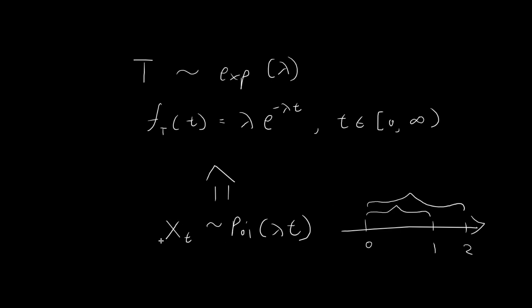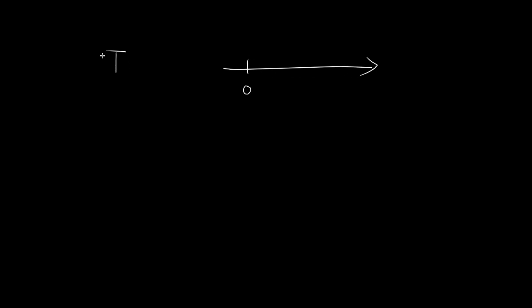I'm going to show you how we can go from the Poisson process to an exponential distribution. The first thing we're going to do is define the random variable capital T, which represents the time point at which the first event occurs within the Poisson process. You can imagine a timeline starting from time 0, and if capital T equals small t, that means at time t the first event finally occurs.